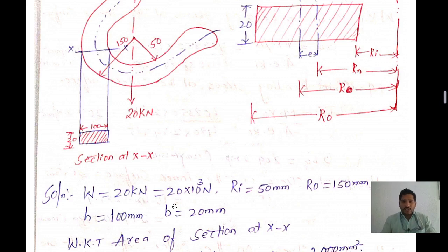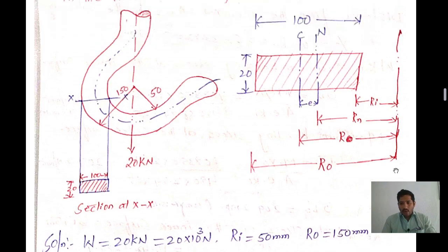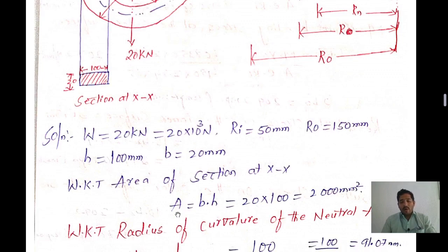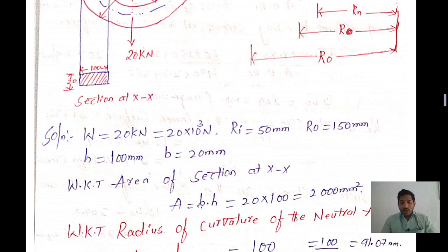First, we find the area of the section at reference axis X-X. Using the formula for a rectangular section: Area = breadth × height. Breadth is 20 mm and height is 100 mm, so Area = 20 × 100 = 2000 mm².